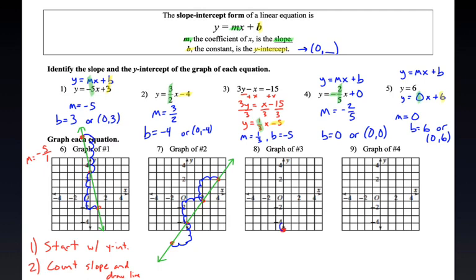Number 8, the intercept is negative 5. I wish my graph was a little bit bigger. My slope is 1 third, so it's going to go up 1 to the right 3. Up 1 to the right 3. Or, down 1 to the left 3. And, there's my line.